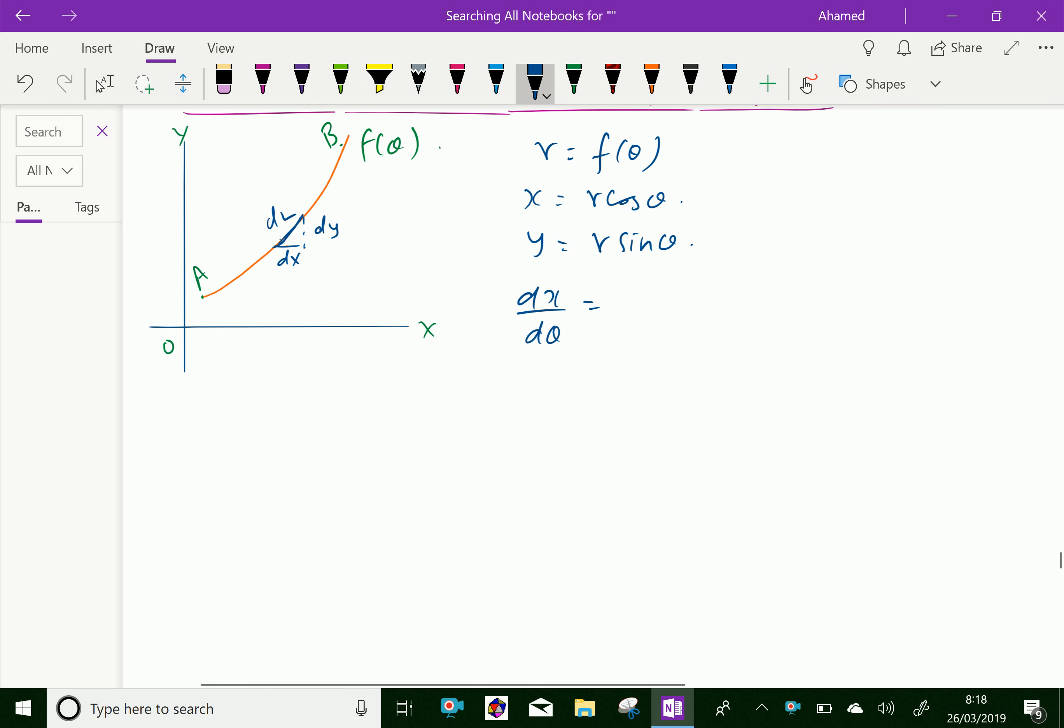This gives dL square. Now, cos square theta plus sin square theta equals 1, so we have r dash square plus r square equals dL square.